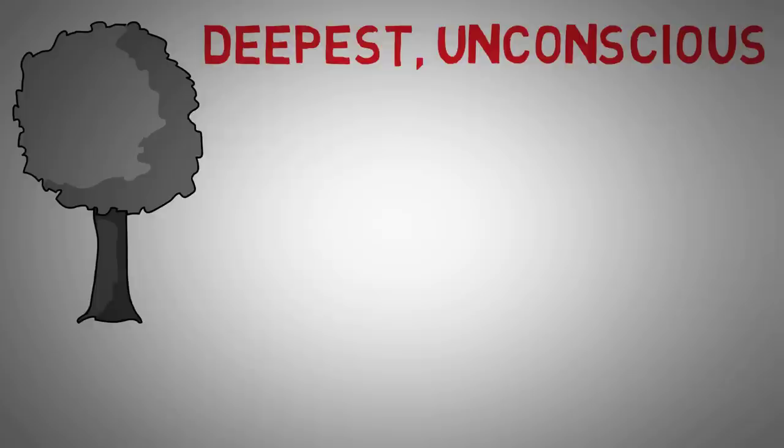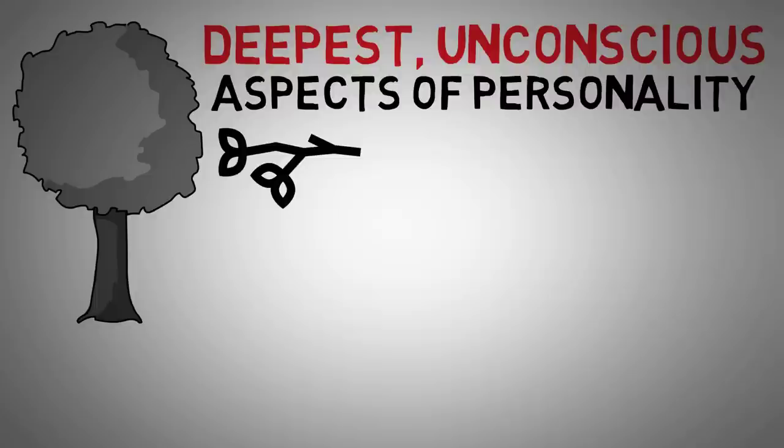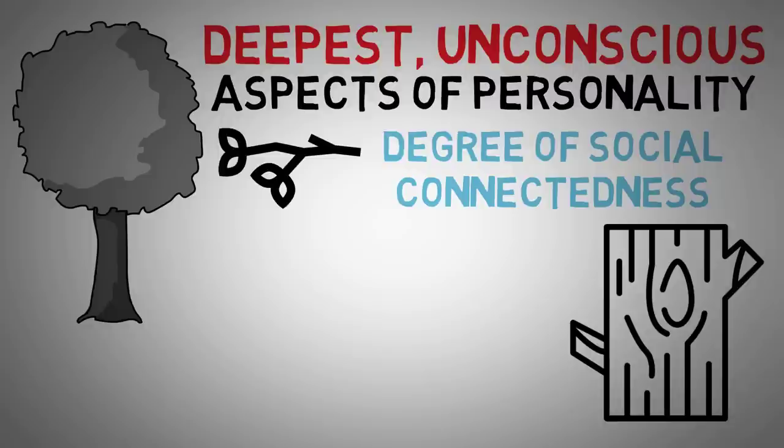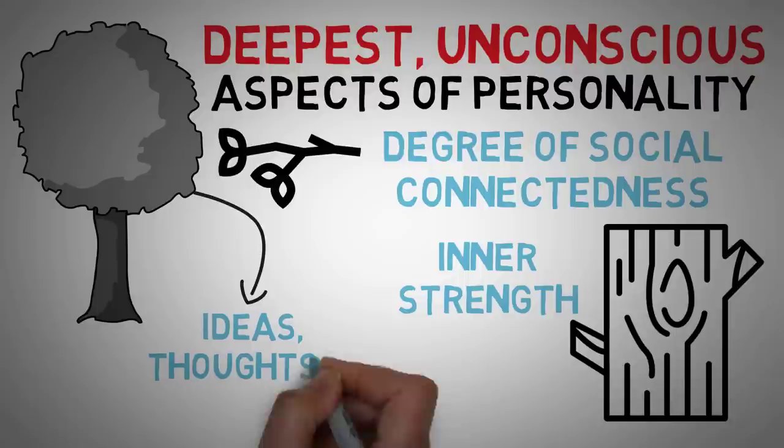Next we have the tree. The tree is thought to suggest the deepest unconscious aspects of their personality. The branches may show the degree of social connectedness. For example, a tree with no branches indicates that the person has little contact with others. The trunk is often seen as a representation of inner strength. And the tree crown stands for ideas, thoughts, and self concept.